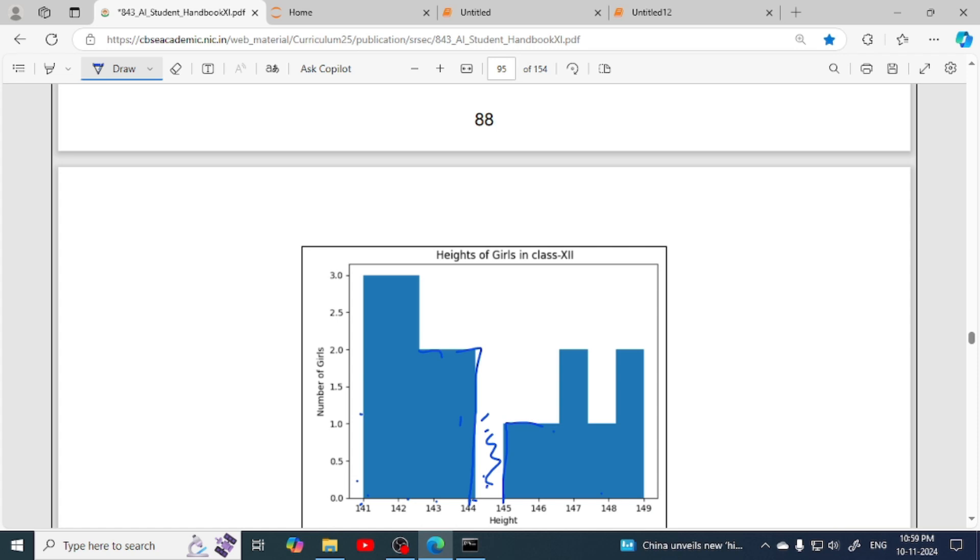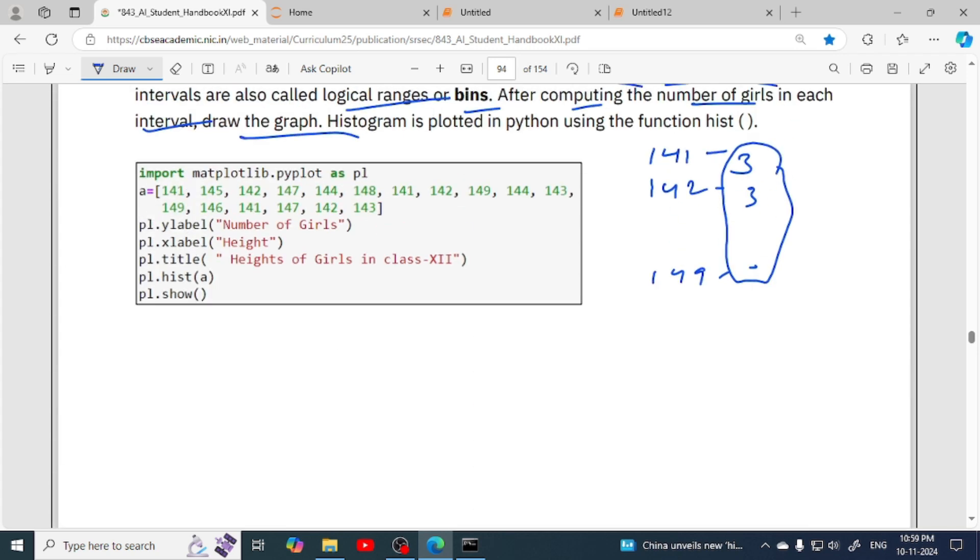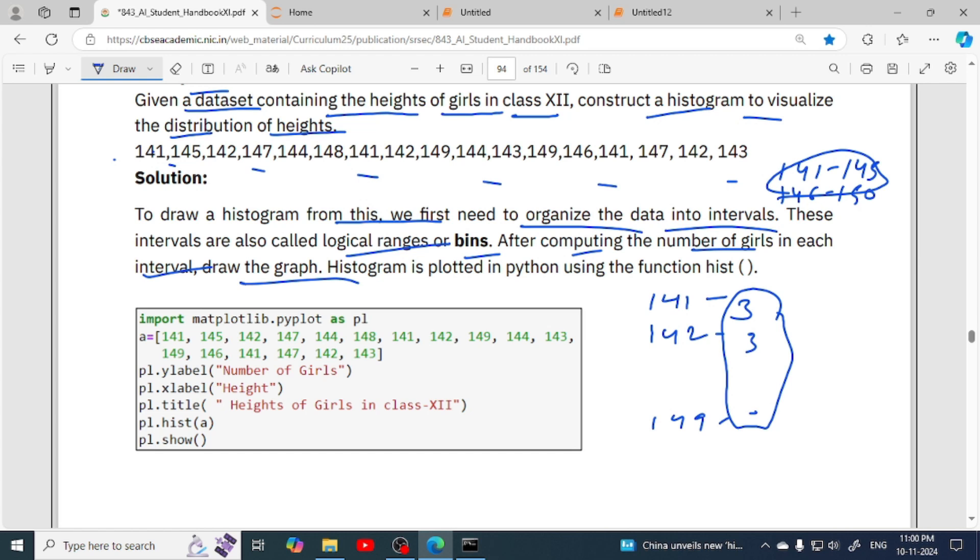Now we will see how we can write the program. As we have already imported matplotlib for line chart and bar chart, here we are going to use matplotlib.pyplot as pl. Matplotlib is a library, pyplot is a submodule, and pl is the alias or alternate name for this library. Using the import word we have successfully imported this library, so now we can use this library's functions.